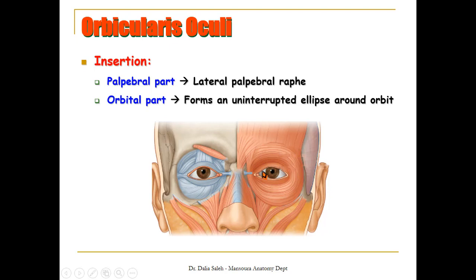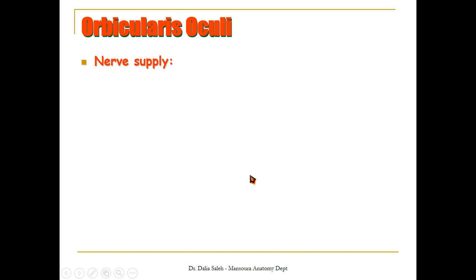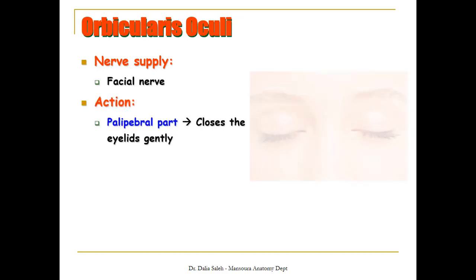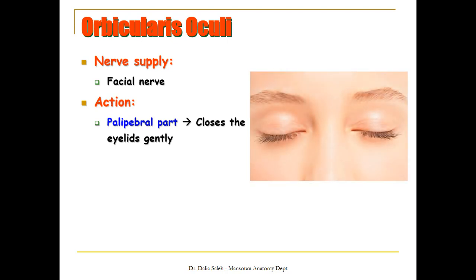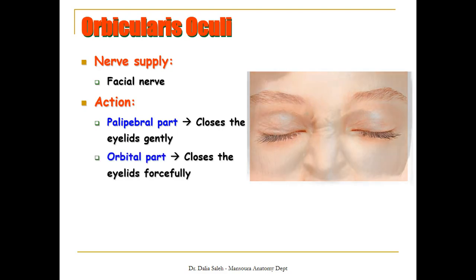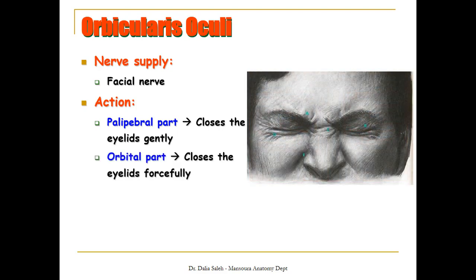The orbital part forms an uninterrupted ellipse that circles around the orbit, starting from the medial side, going around the orbit, and inserting in the same place. For the nerve supply, like any other muscle in the face, the orbicularis oculi is supplied by the facial nerve. For the action, the palpebral part closes the eyelid gently, as if sleeping, while the orbital part will forcefully close the eyelid — as when you are protecting your eye by closing it tightly.